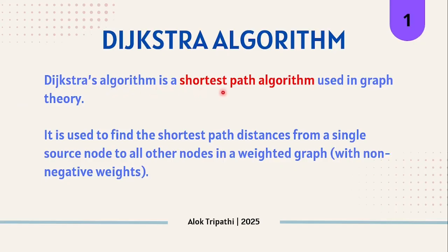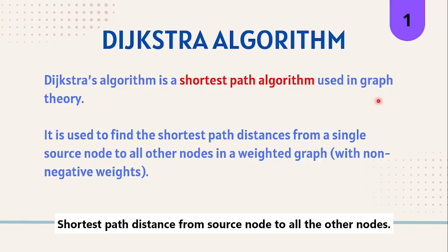Dijkstra's algorithm is a shortest path algorithm used in graph theory. Let's imagine having a graph with one source node and the rest of the other nodes. The main aim of Dijkstra's algorithm is to find the shortest path distance from the source node to all the other nodes.